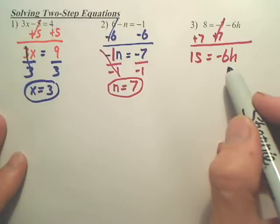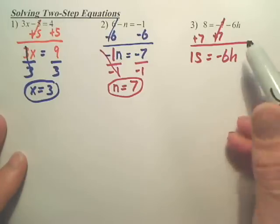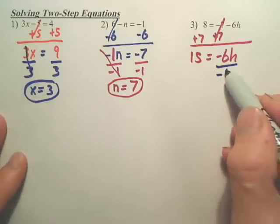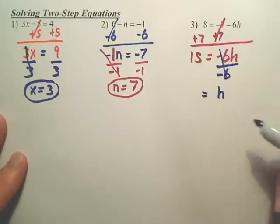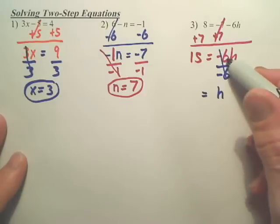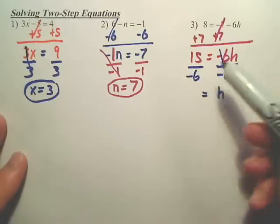So I want to get the h by itself. So that's negative 6 times h. The opposite of times is divide. So I'm going to divide by negative 6, which cancels nicely, leaving me h. Both sides by negative 6.